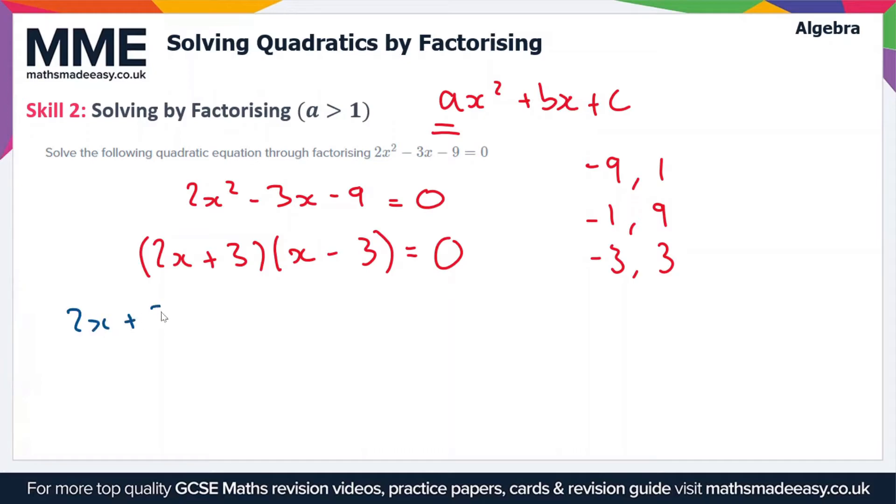So if 2x plus 3 is equal to 0, then 2x equals minus 3. And therefore, x equals minus 3 over 2, which is equal to minus 1.5. So that's one of the solutions.